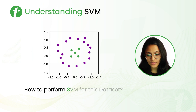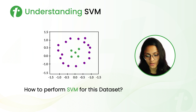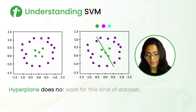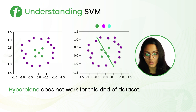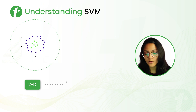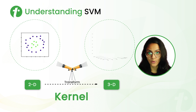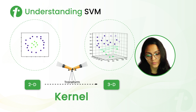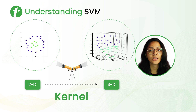Now, how are we going to separate a dataset where we already have a 2D plot but one category lies within another category? Again, the hyperplane does not work for this kind of dataset — we can't separate it using the hyperplane. So again, we are going to transform this 2D plot using the kernel function into a 3D plot. And from this 3D plot, we can observe that we are able to separate the two categories using the hyperplane.